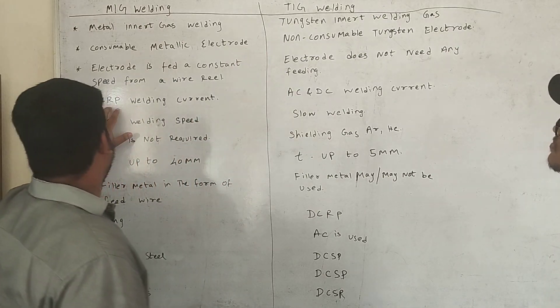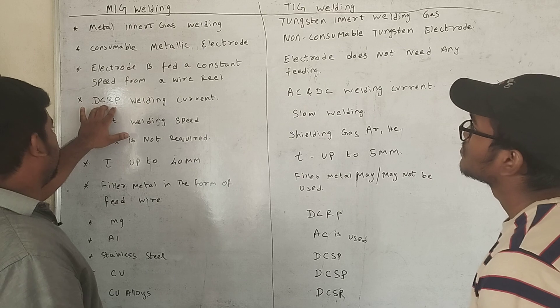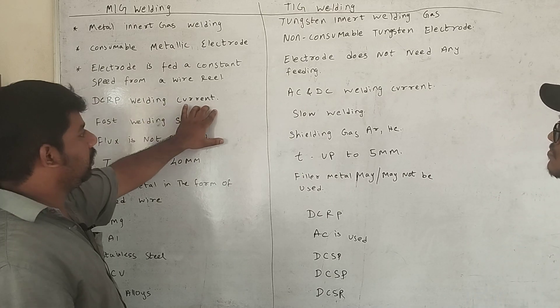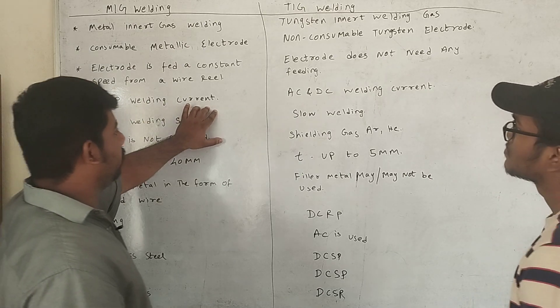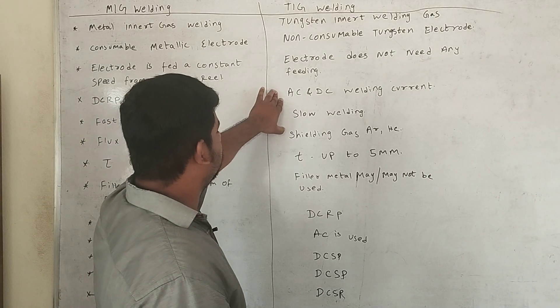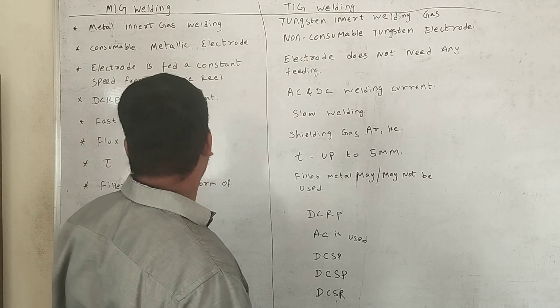MIG uses DC RP — direct current reverse polarity welding current. TIG welding uses both AC and DC welding current.